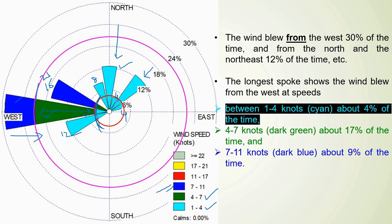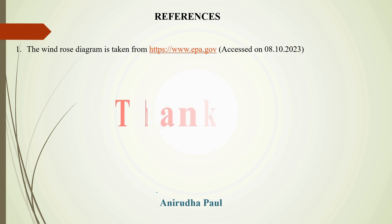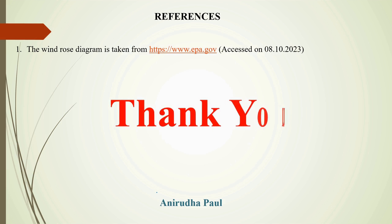We should keep in mind that equal length spokes represent great variation of wind direction over a given duration, and spoke length does not represent wind speed in a given duration. In our next video, we will learn what is required for preparing a wind rose and how we prepare a wind rose.